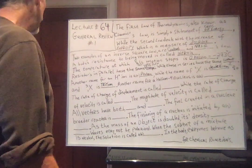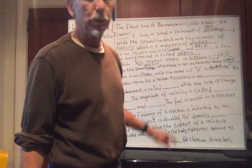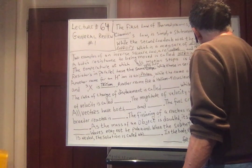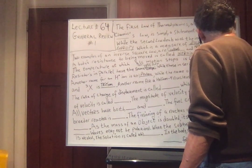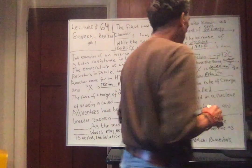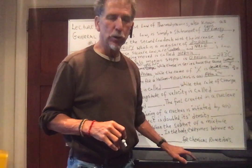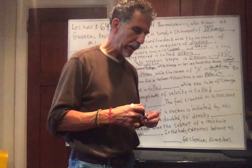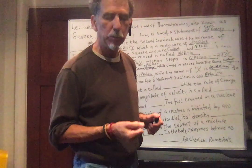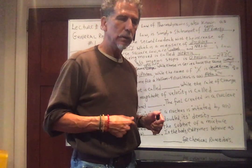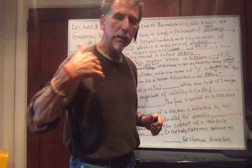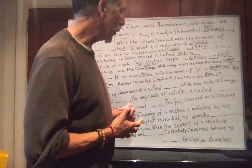Another name for a helium-4 nucleus is the alpha particle. An alpha particle has two protons and two neutrons, so its charge is plus two and its mass is four in atomic mass units. If element 80 loses an alpha particle, you subtract two protons and it becomes element 78. If element 40 loses three alpha particles, you've lost six protons, so you become element 34.